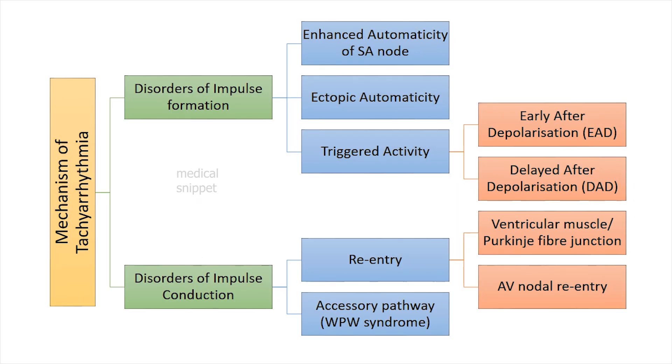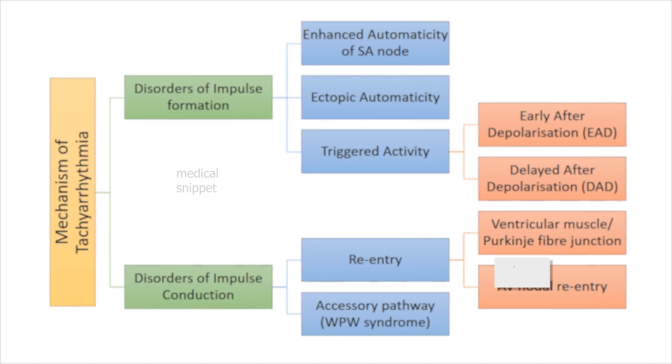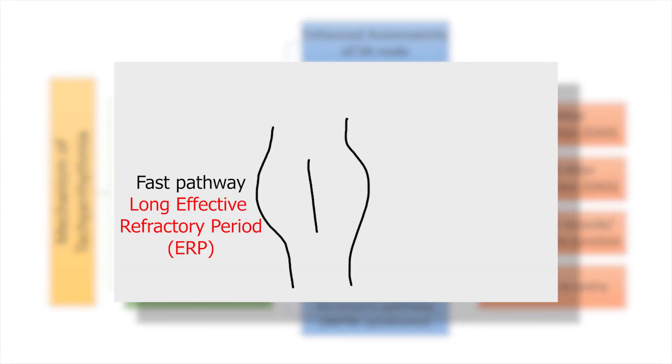AV node has parallel pathways having different conduction rates. The fast conduction pathway has a long refractory period, and the slow pathway has a shorter refractory period. In normal sinus rhythm, the impulse along the fast pathway enters the bundle of His, and the impulse along the slow pathway becomes blocked near the bundle of His as it hits the fast pathway when it is in the refractory period.